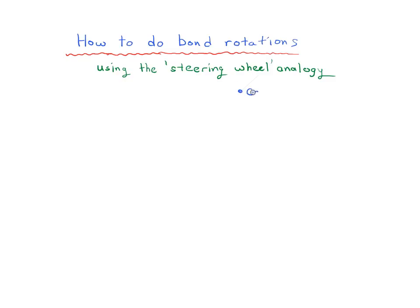Bond rotations are especially important when you're covering topics such as conformations — these are different three-dimensional orientations of molecules where rotations of certain bonds give you different three-dimensional shapes. There are also situations in learning the stereochemistry of molecules where you'll need to know how to do some simple bond rotations to figure out how different molecules are related to each other.